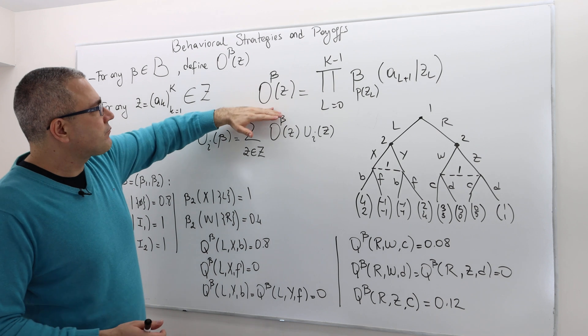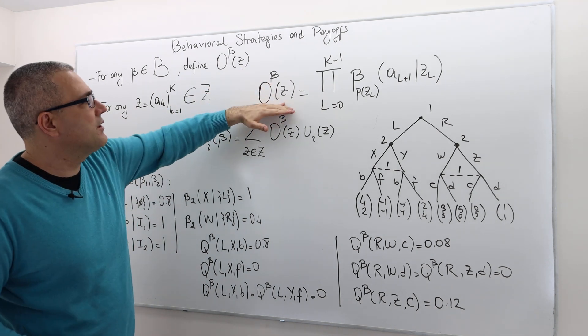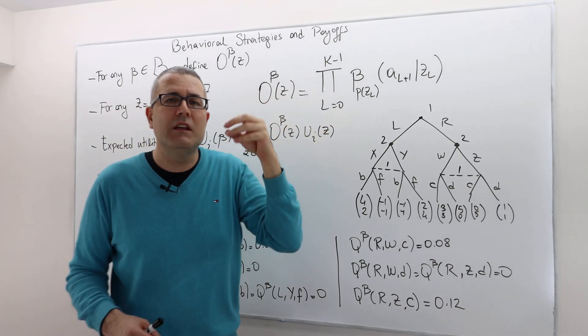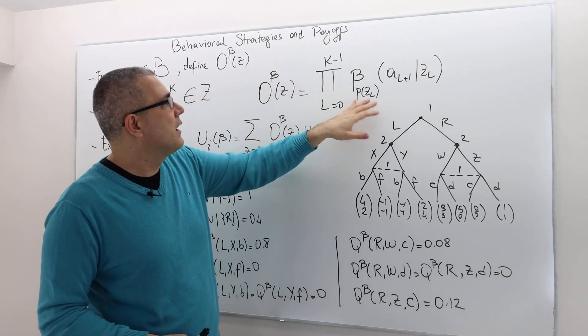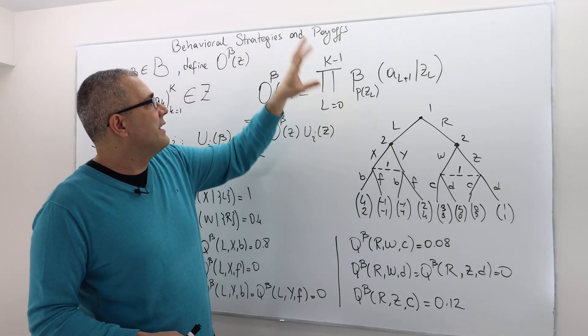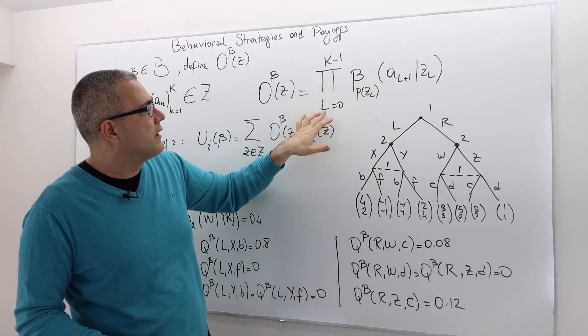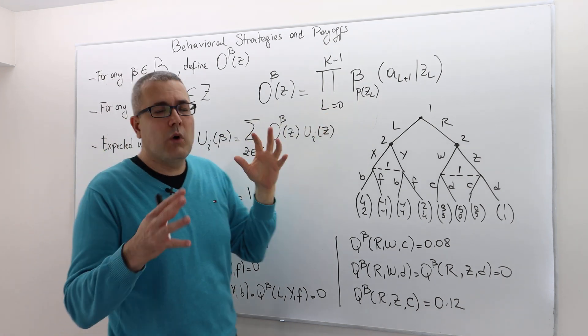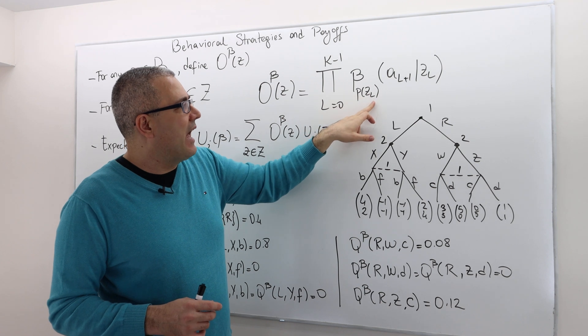The O(β,Z) for that particular terminal history is defined by the following: we multiply a bunch of probabilities, k many probabilities. Starting from L equals 0 to k minus 1, what we find is the β of P(ZL).